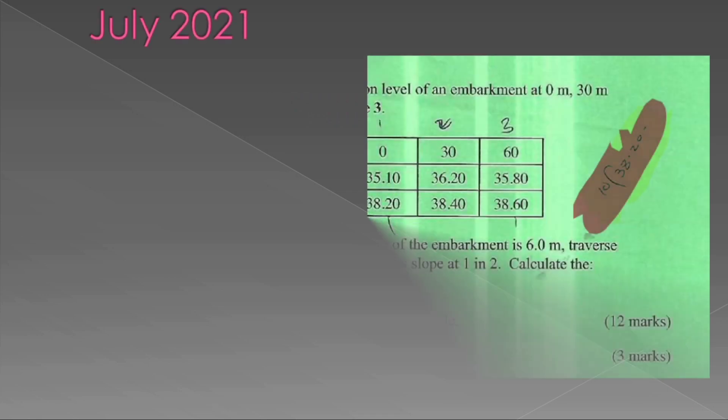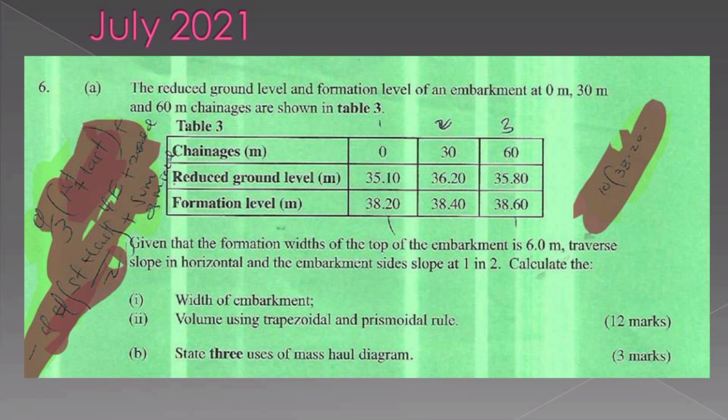Let's look at question 6a. The reduced ground level and formation level of an embankment at 0 meter, 30 meter, and 60 meter chainages are shown in the table below. In the table we have the chainages, the reduced ground level, and the formation levels all in meters.